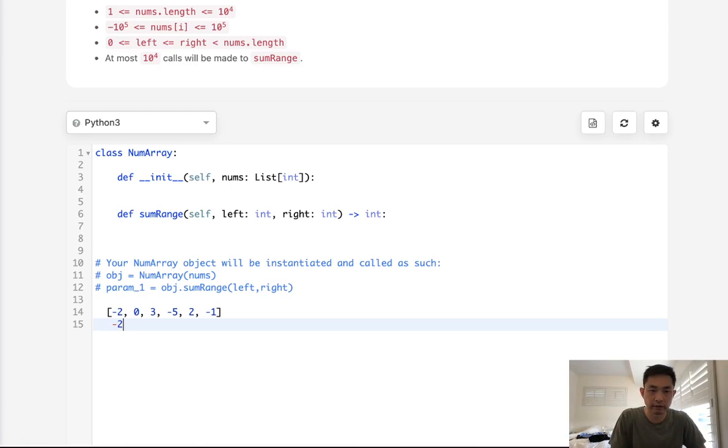It would say like negative 2. We add 0 so that's going to be negative 2 still. We add 3 so now it's 1. Now it's going to be negative 4. Now it's going to be negative 2. And now it's going to be what? Negative 3, right?